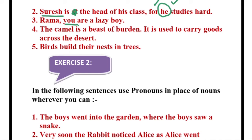'Rama, you are a lazy boy' — 'you' is the second person personal pronoun. 'The camel is a beast of burden' — we cannot understand the gender, and for the second sentence we have written 'it' — neuter gender. Number five: 'Birds build their nests in trees' — this sentence does not have any pronoun because 'their' is sitting beside 'nests,' which is a noun, and noun and pronoun do not sit side by side.